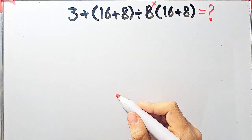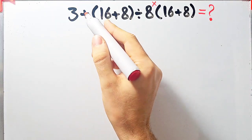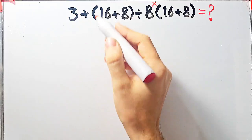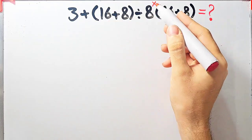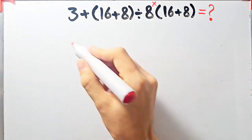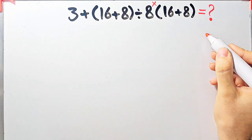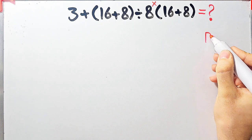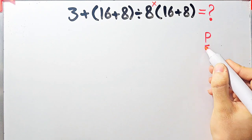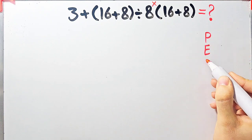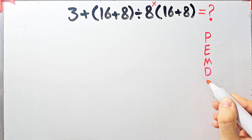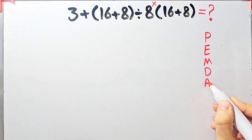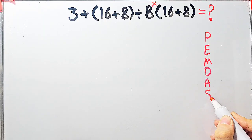In this question, we have addition, parentheses, division, and multiplication. To solve this question, we need to follow the order of operations, which is PEMDAS. PEMDAS shows the priority of the mathematical operations, and if you don't pay attention to this rule, you get the wrong answer.